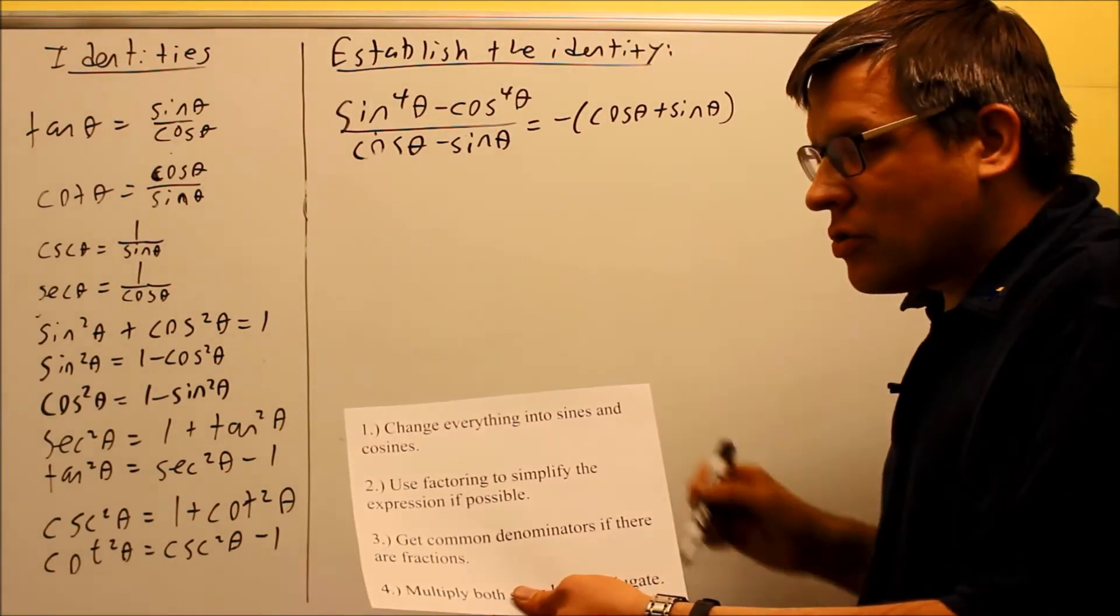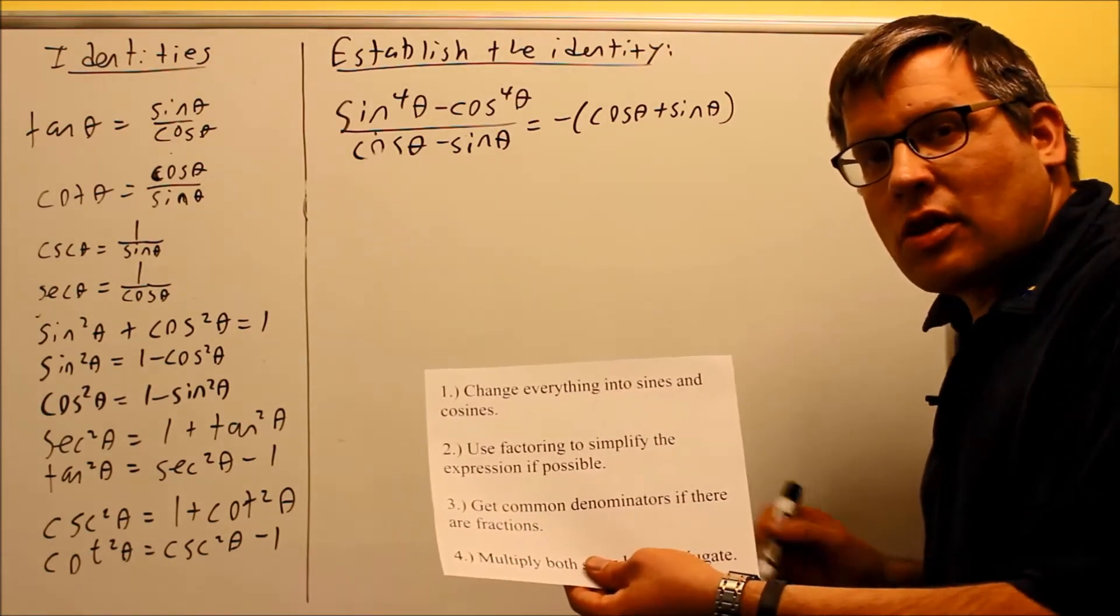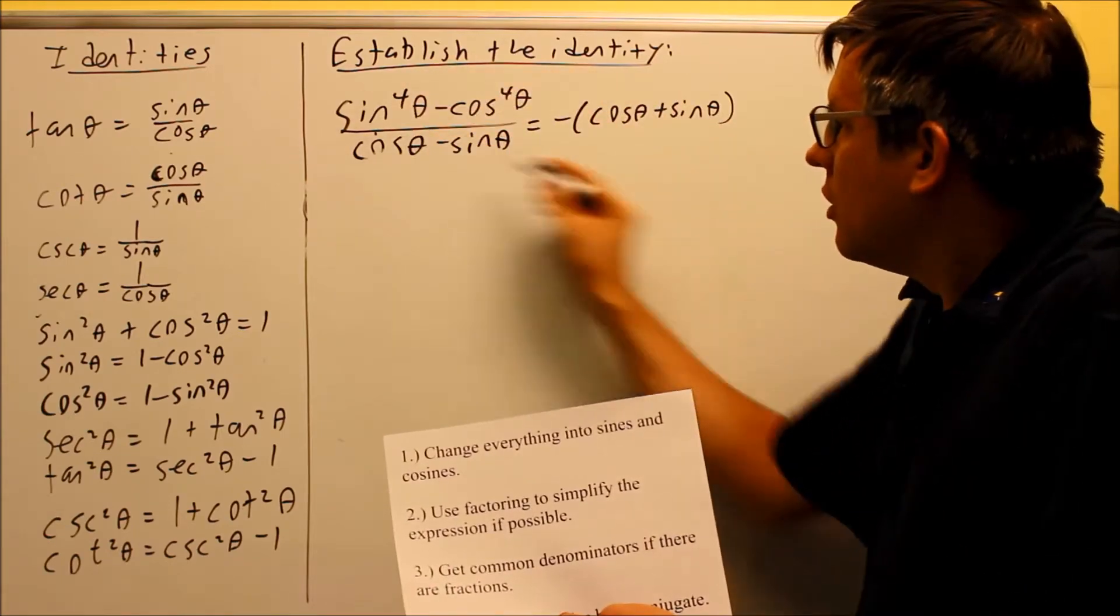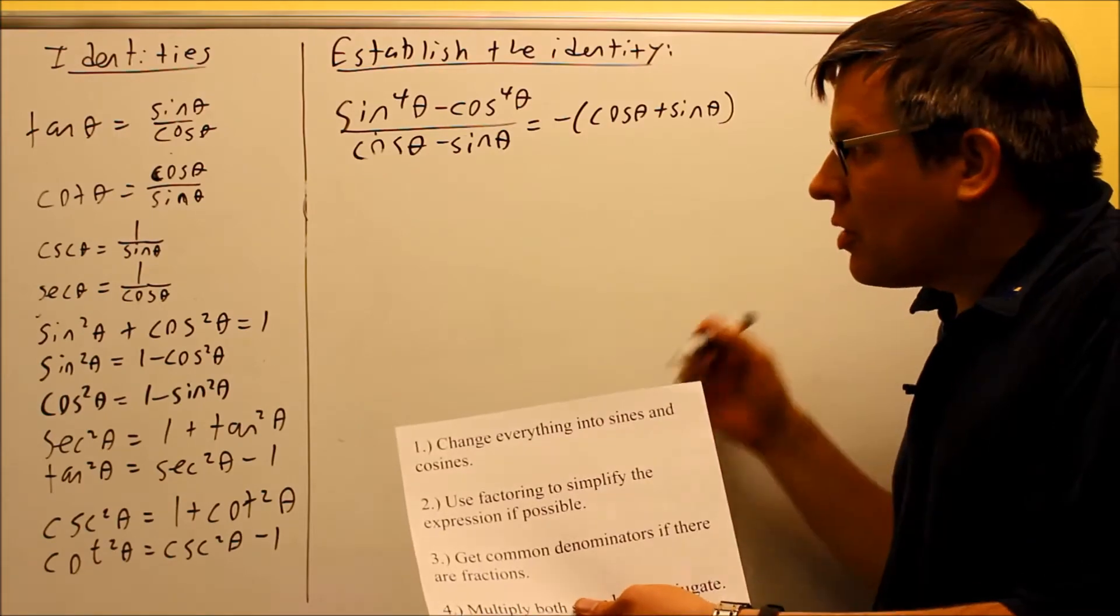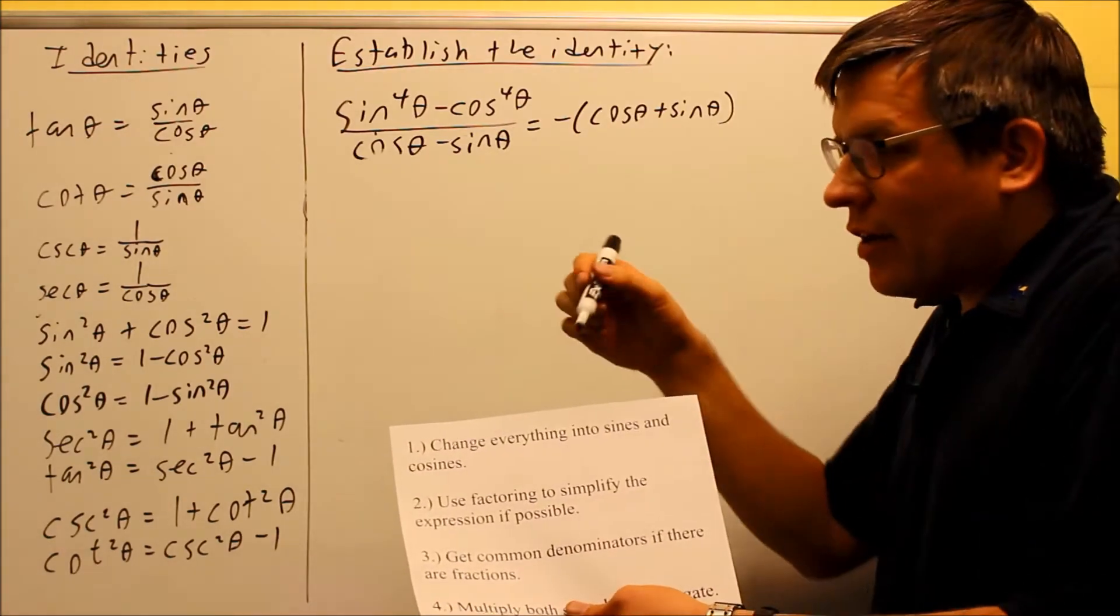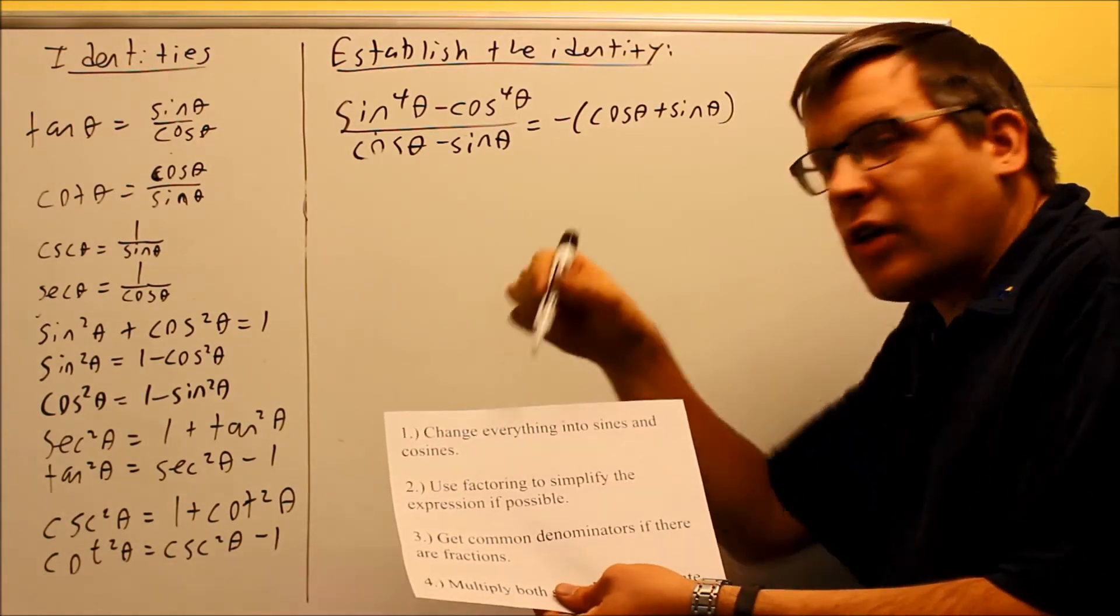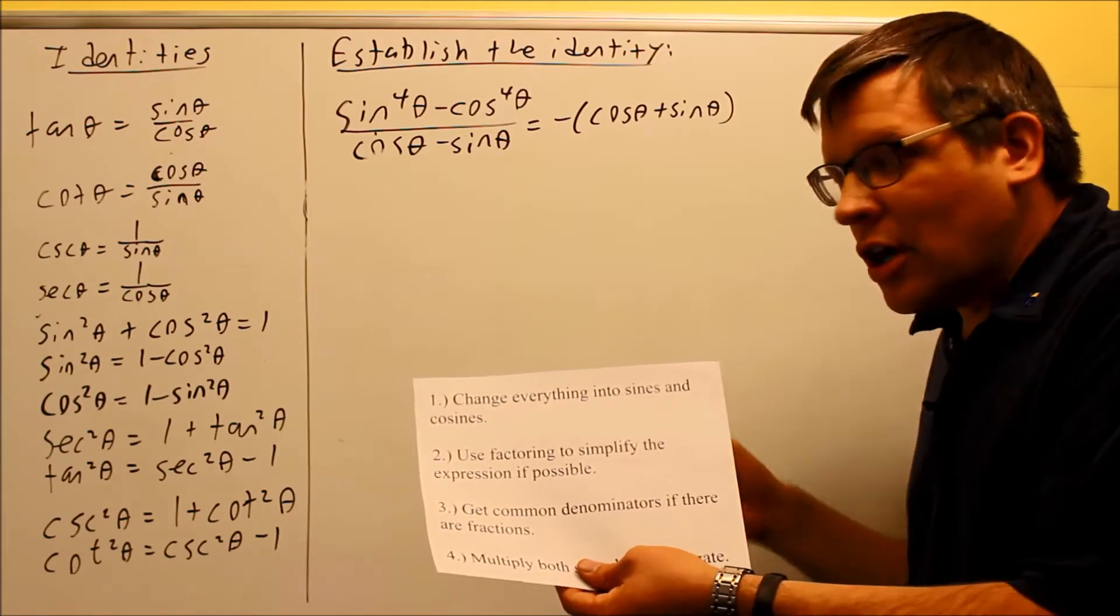Now in this case, the first technique is change everything into sines and cosines, and that technique is not going to apply here because everything is already written out in terms of sines and cosines. So if I can't apply that first technique, then I would want to move on and try one of the other techniques instead.